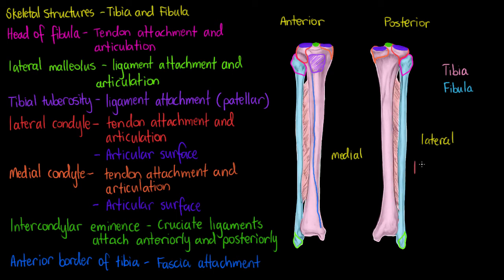While we are talking about connective tissue, I've just highlighted our interosseous membrane. Interosseous membrane meaning between bone. Like with the interosseous membrane of our forearm, the membrane of our leg helps to separate the muscles of our lower leg into anterior and posterior compartments.